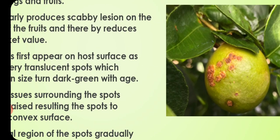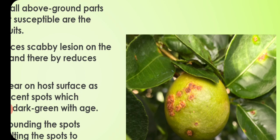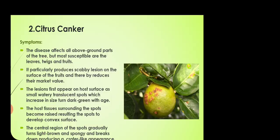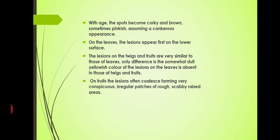The central region of the spots gradually turns light brown and spongy and breaks down, producing a crater-like appearance. First the appearance is convex; then when the disease is prolonged, the center portion becomes more dark-colored and that area becomes spongy and depressed — like a crater or ditch appearance. With age the spots become corky and brown, sometimes pinkish. On the leaves the lesions appear first on the lower surface. The lesions on twigs and fruits are very similar to those on leaves.